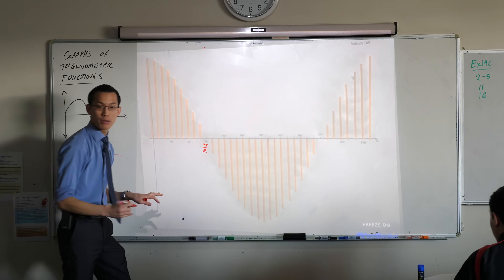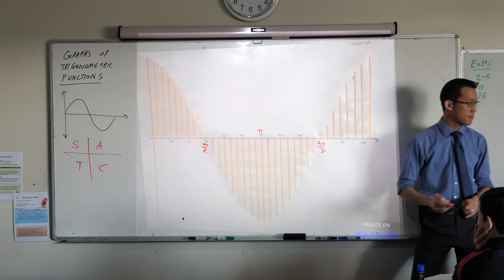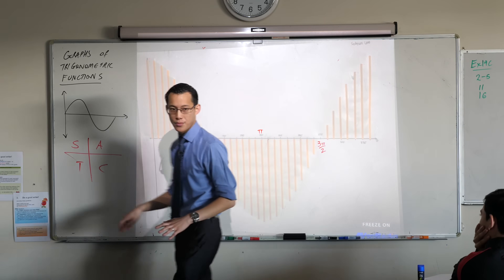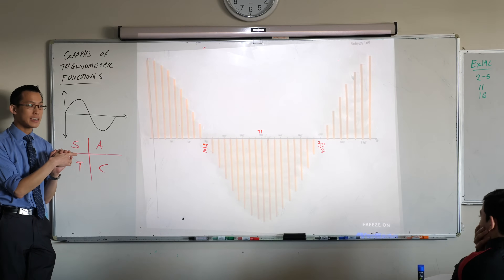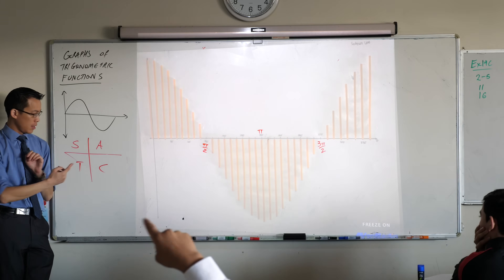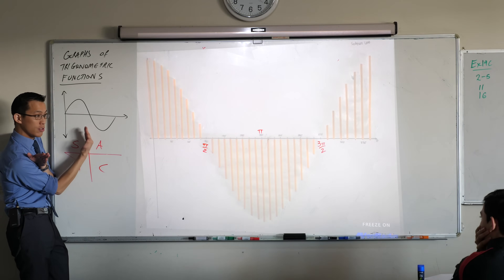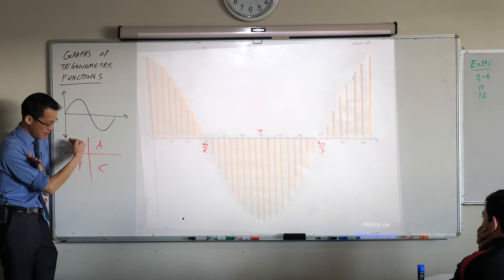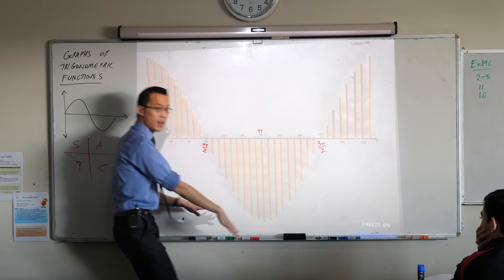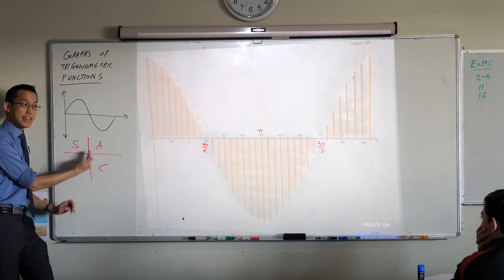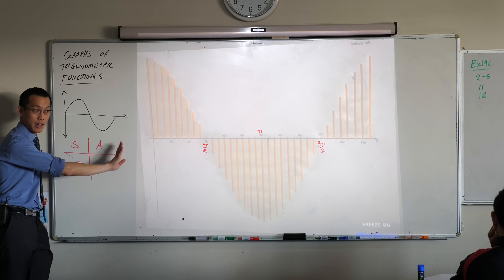So, same deal with the cosine graph. We've got π/2 here, 3π/2 here, and π smack bang in the middle. When you have a look at the quadrants diagram, where is cosine negative? It's on the left-hand side. In other words, what angles from π/2 all the way to 270, which is 3π/2 — that's exactly this range where the graph is below. Because for cosine, you're measuring the x-coordinate. The x-coordinate is to the left over here — they're all negative. That's why these values are negative.